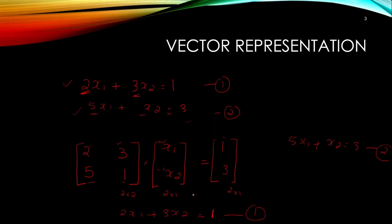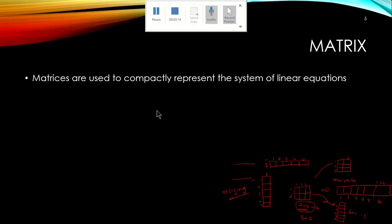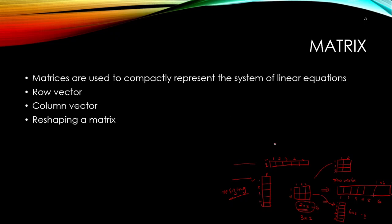Matrices can be used to compactly represent systems of linear equations, and these representations are heavily used in machine learning. There are vector representations like row vector and column vector. A row vector has only one row and many columns, while a column vector has many rows but one column. In machine learning, vectors always represent a column vector or column matrix.